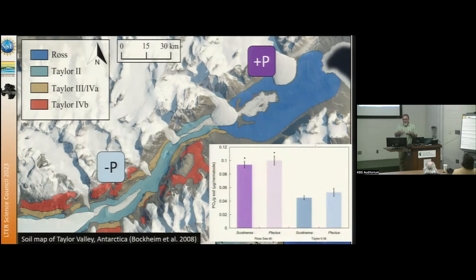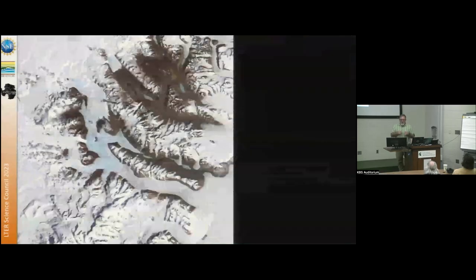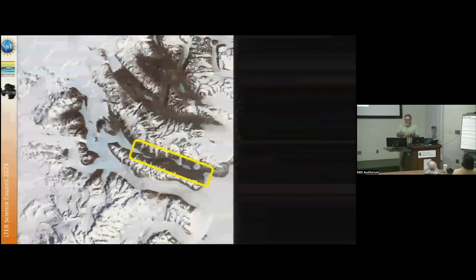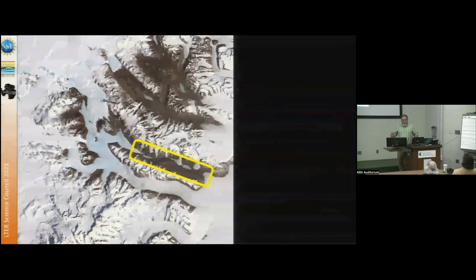The consequence of that: if we look at the phosphorus content of two nematodes — Scottenema and Plectus — we see much higher concentrations down valley and much lower concentrations up valley. So we get the opportunity now to regionalize and think about where these different deposits are and what consequences we have for life in our region. We've moved beyond using just static glacial coverage maps and are thinking carefully about what happens in more focused regions.